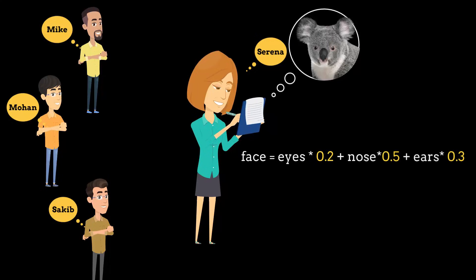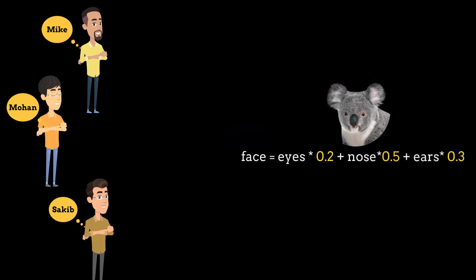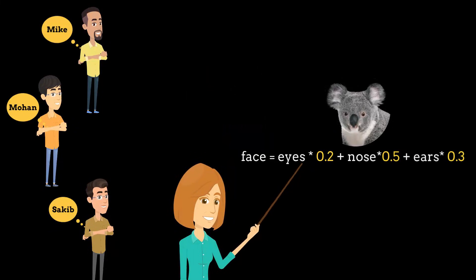Once Mike, Mohan, and Shakib say that this image has koala's eyes, nose, and ears, Serena can use their work to figure out if the image has koala's face or not. She can use a formula like this, because if you look at koala, the nose is very prominent—koala's noses are very different than other animals—so if there is a prominent feature, you can give that more weightage. Serena can derive this formula for detecting the face.